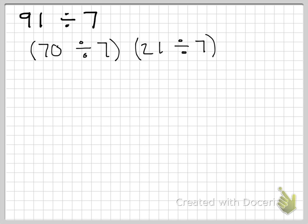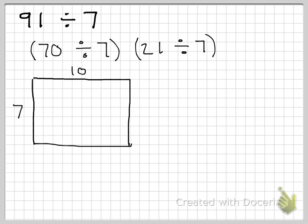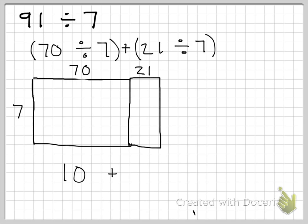So I'm going to use that. I would go down 7 rows — 1, 2, 3, 4, 5, 6, 7 — and go over 10 columns. That's 70 in that section. And then the other section is 21, which is 7 by 3. So, 70 divided by 7 is 10, and 21 divided by 7 is 3. Ten plus 3 is 13. So our quotient is 13.